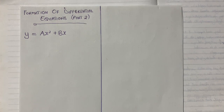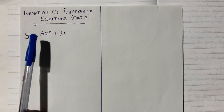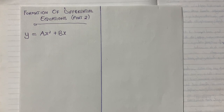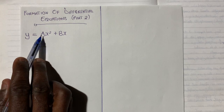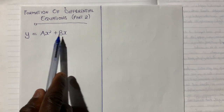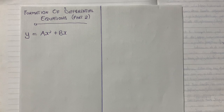In this question we have y equal to ax squared plus bx, and we are told to form a new differential equation. As I said in my previous video, a and b are called the arbitrary constants — so there are two constants. The number of constants in the question determines how many times you differentiate. Since we have two arbitrary constants, we will differentiate the equation two times.